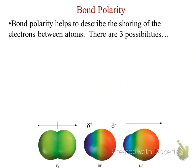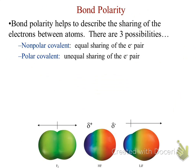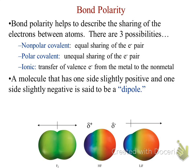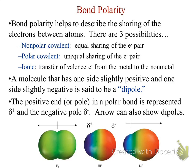Bond polarity helps us describe the sharing of electrons in atoms. There are three possibilities: nonpolar, where electrons are shared equally; polar, where we have unequal sharing; or ionic, where we completely transfer. A molecule that has one side slightly positive and one side slightly negative is said to be a dipole — di meaning two, pole meaning it has two opposite charges. The positive end of a polar bond is represented by delta-positive and the negative pole by delta-negative with a lowercase delta.